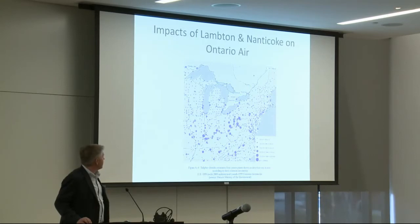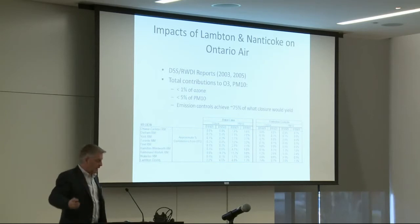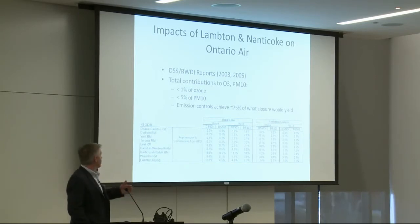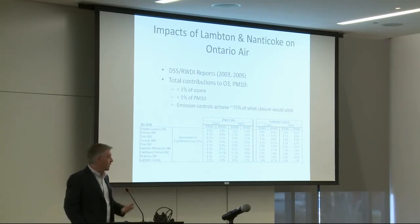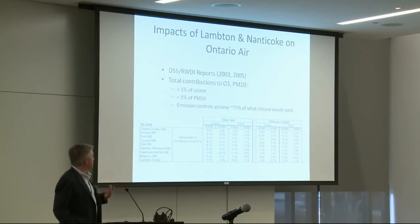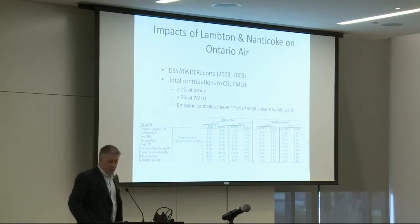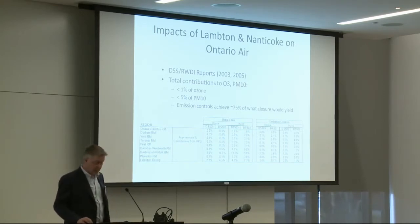RWDI in Guelph — an air quality and engineering analysis firm — did simulations for the provincial government of what would happen in smog episodes if the Lambton and Nanticoke generating stations were removed. In the immediate vicinity of the power plants there would be noticeable reductions of about 10 to 15%. For the rest of the province, the effects on ozone would be less than 1% of current levels and less than 5% of fine particulates — very small changes given the costs of shutting those power plants down.